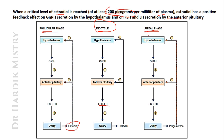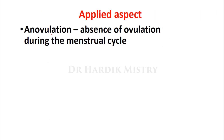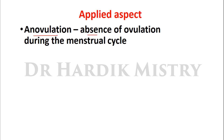In the post-ovulatory or luteal phase, the hypothalamus releases GnRH, stimulating the anterior pituitary to release FSH and LH. In this phase, progesterone is released from the ovary and exerts a negative feedback effect on both the hypothalamus and anterior pituitary, resulting in decreased GnRH, FSH, and LH concentrations. The applied aspect: anovulation refers to the absence of ovulation during the menstrual cycle, and the cycle is known as an anovulatory menstrual cycle.